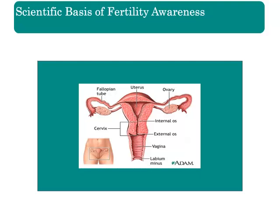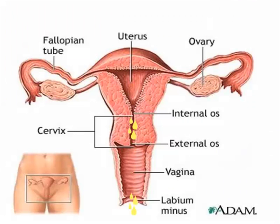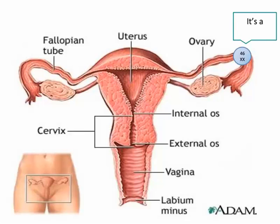Now that we have identified the three key components of fertility, let's see how and when they work together. Around ovulation, the cervix produces and secretes fluid that helps sperm swim up the cervix, survive in the crypts, and ultimately reach the ovum. Ova are produced and mature in the ovaries; during ovulation, usually one ovum is released into the fallopian tube. When a sperm and an ovum meet in the fallopian tubes, fertilization occurs and a genetically unique human being is created.